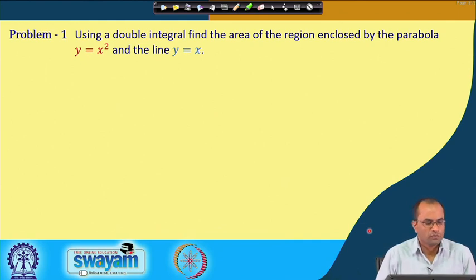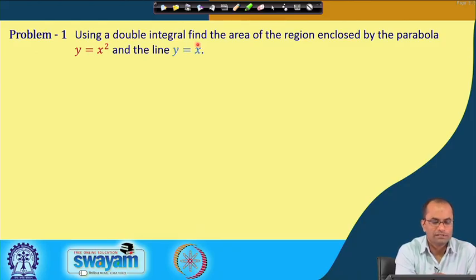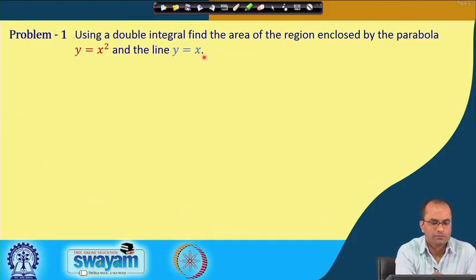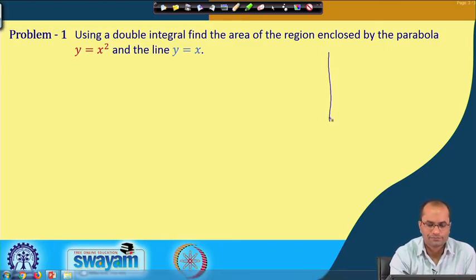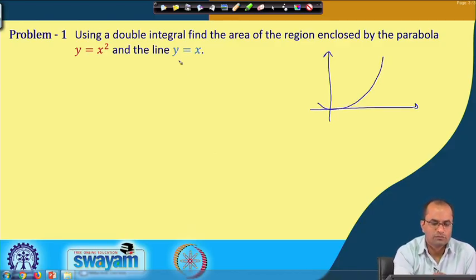Let us start with Problem 1 where we will find the area. Using a double integral, find the area of the region enclosed by the parabola y = x² and y = x. We have two curves here: the parabola y = x² and the straight line y = x.